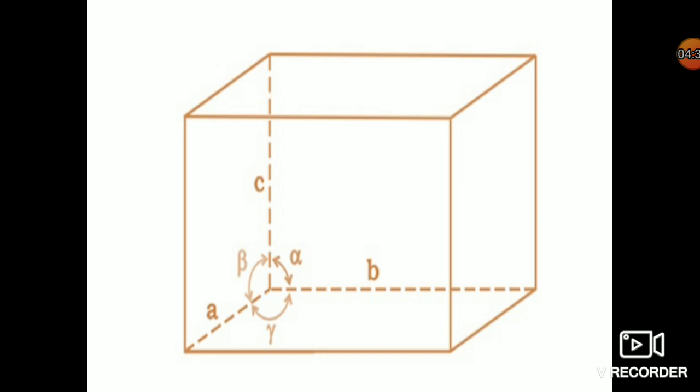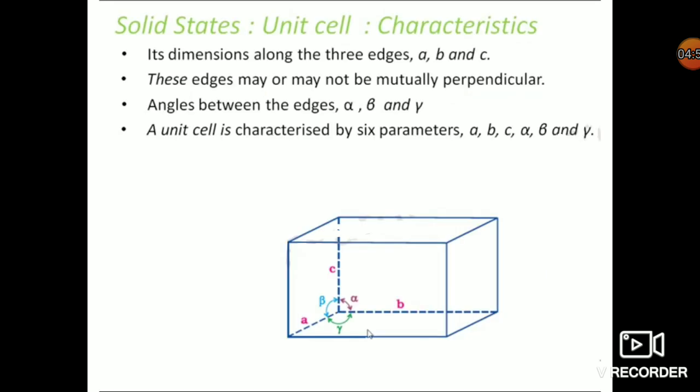Now we'll see the characteristics of the unit cell. This is one block taken from the whole crystal lattice — the unit cell. Whenever you consider a box, you get three edges a, b, c, and also the angles between them. The unit cell is characterized by its dimensions along the three edges a, b, and c. The values of these edges determine the characteristics of the unit cell — sometimes all three are equal, two might be equal while the third is unequal, or all three might be unequal.